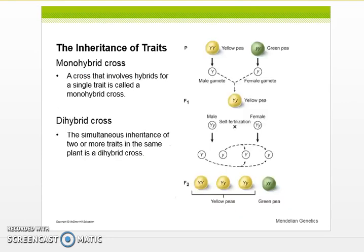There's two different types of crosses that you will need to know a lot about. The first one is mono and the second one is dihybrid. Notice that's a carryover from our cells. Mono is a single cross. It's a cross that involves hybrids for a single trait and it's called a monohybrid cross. Dihybrid is the simultaneously inherent of two or more traits in the same plant. So if you're doing just one trait, that is a monohybrid cross. If you're doing two or more, that is a dihybrid cross.